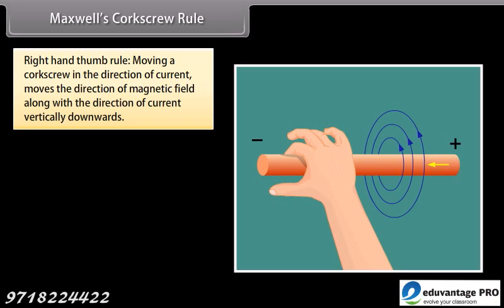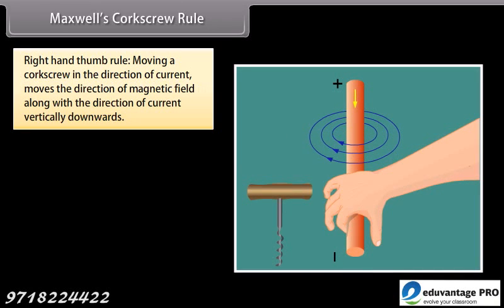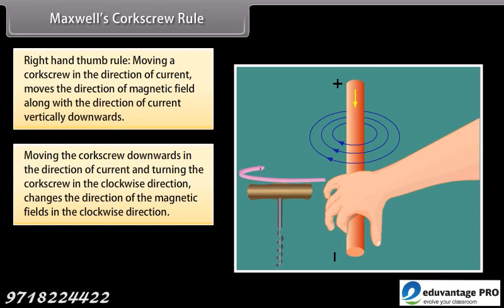Maxwell's corkscrew rule. Maxwell's corkscrew rule, also known as right hand thumb rule, defines that moving a corkscrew in the direction of current moves the direction of magnetic field along with the direction of current vertically downwards. If we move the corkscrew downwards in the direction of current and the handle of corkscrew is turned in the clockwise direction, then the direction of the magnetic fields is in the clockwise direction.